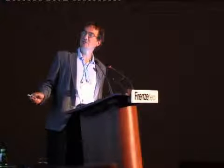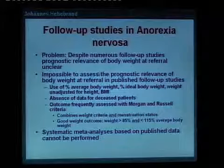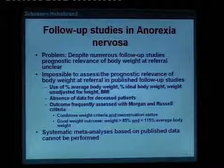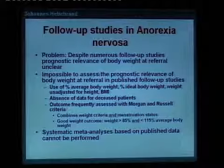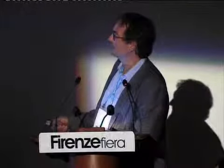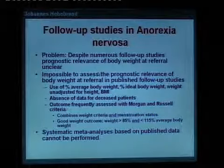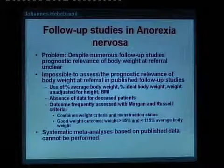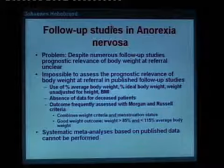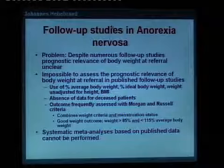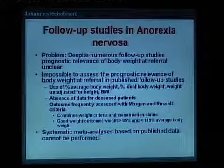We also do not have data on the BMI at referral of deceased patients — follow-up studies report on mortality but not the referral BMI of those who died. Outcome is frequently assessed using the Morgan and Russell criteria, which adds menstruation to weight assessment; while clinically relevant, this can confuse the issues. Morgan and Russell define good weight outcome as weight between 85% and 115% average body weight, meaning overweight or obesity would constitute a poor weight outcome — yet overweight is quite different from maintaining a low anorectic body weight. All of this confusion precludes systematic meta-analysis.